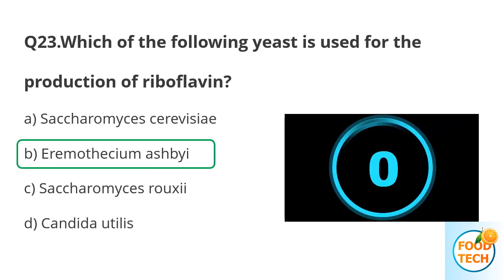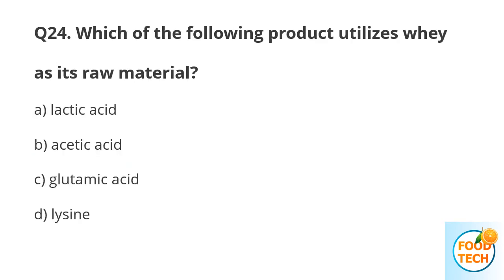Answer B. Eremothecium ashbyii. Question 24. Which of the following products utilizes whey as a raw material? A. Lactic acid. B. Acetic acid. C. Glutamic acid. D. Lysine.